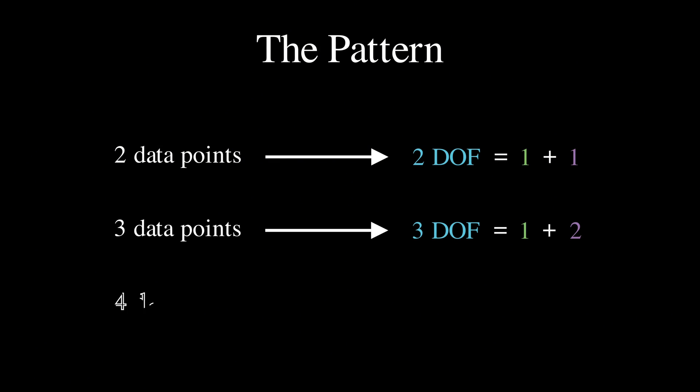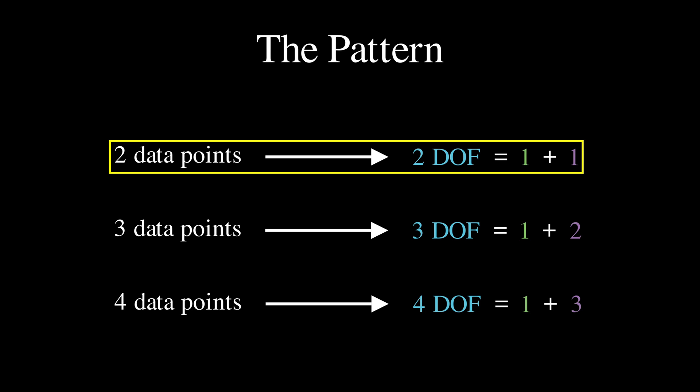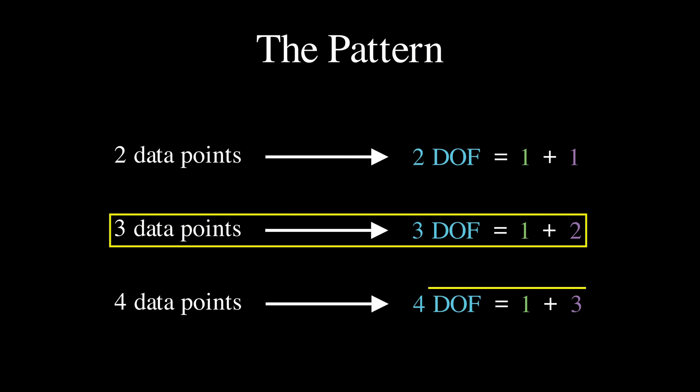With n data points, you start with n degrees of freedom, but when you decompose into mean and residuals, the mean vector always has just one degree of freedom, while the residual vector has n minus one degrees of freedom, because of that sum to zero constraint.